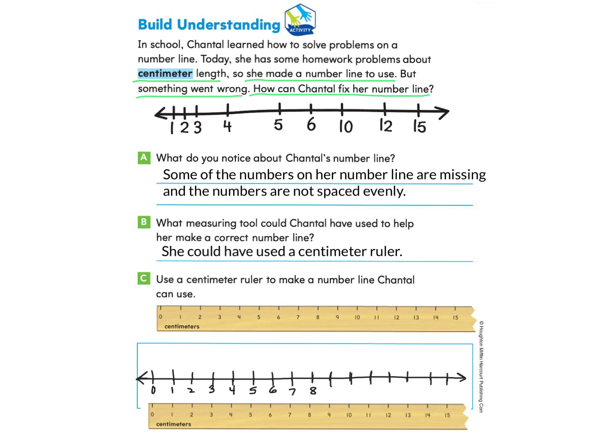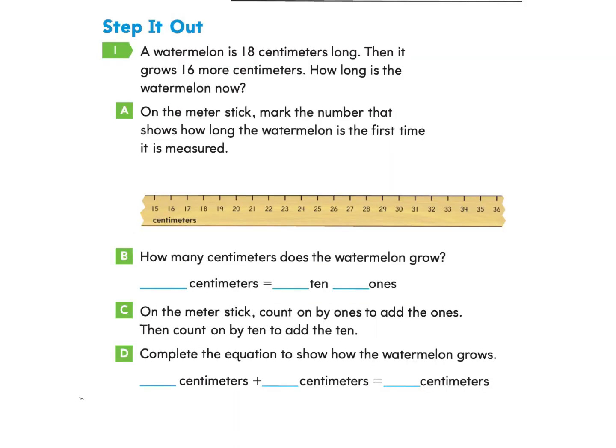So I move my centimeter ruler down and then I can start writing in the numbers below just like this. And again, you can follow along or you can pause and try this part on your own. Now I have made a number line that she can use by using a centimeter ruler to make it. Let's take a look at the next page, page 501 under Step It Out.